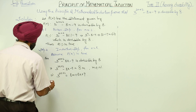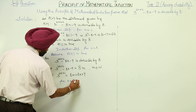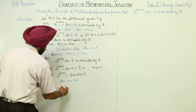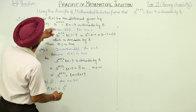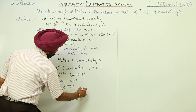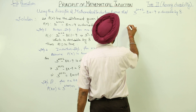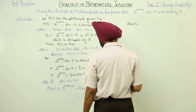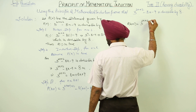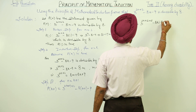Step 3: For n = k + 1, P(k + 1) is given by 3 raised to power (2(k+1) + 2) minus 8(k + 1) minus 9. Solving this, P(k + 1) equals 3 raised to power (2k + 2 + 2) minus 8k minus 8 minus 9.